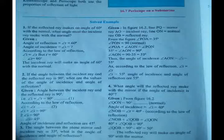According to the law of reflection, angle of incidence equals angle of reflection. Substituting angle R equal to angle I, the equation becomes: angle I plus angle I equals 90 degrees, that is 2 times angle I equals 90 degrees. Dividing 90 by 2, the answer is 45 degrees. Therefore, angle of incidence equals 45 degrees.